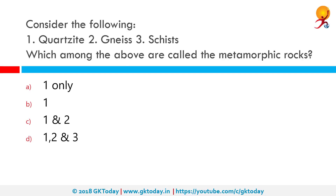Which among the following are called metamorphic rocks: quartzite, gneiss, or schist? The correct answer is all three. Quartzite is a hard metamorphic rock originally formed from sandstone through heating and pressure related to tectonic compression. Gneiss is a common rock formed by high-grade regional metamorphism from pre-existing igneous or sedimentary rocks. Schist is a group of medium-grade metamorphic rocks notable for the preponderance of lamellar minerals such as micas, chlorite, talc, hornblende, and graphite.